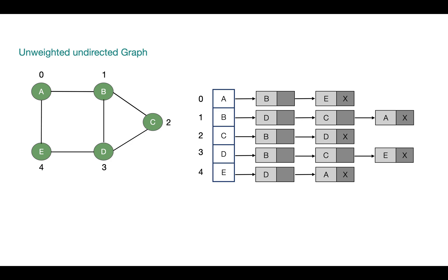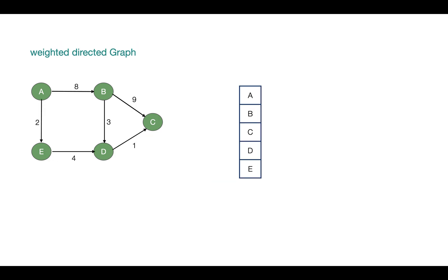For weighted undirected graph, we will be having this representation. And if the graph is directed, then this adjacency list representation will be having half of the number of vertices that we were having in the undirected representation. So here A is having B and E as adjacent vertices, but now the reverse is not true. So that's why the number of vertices in this overall representation will reduce to half.